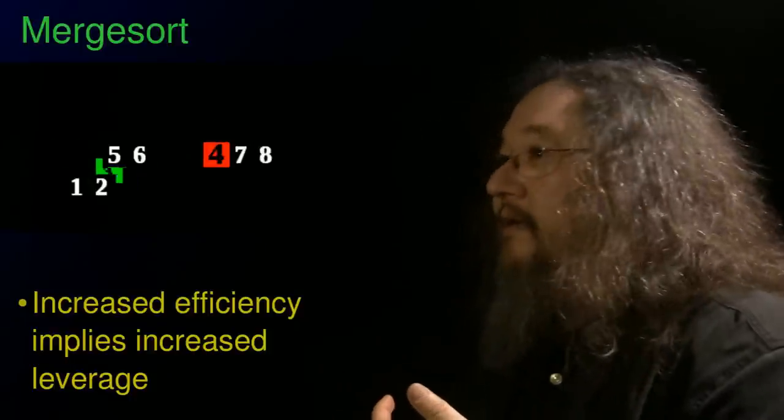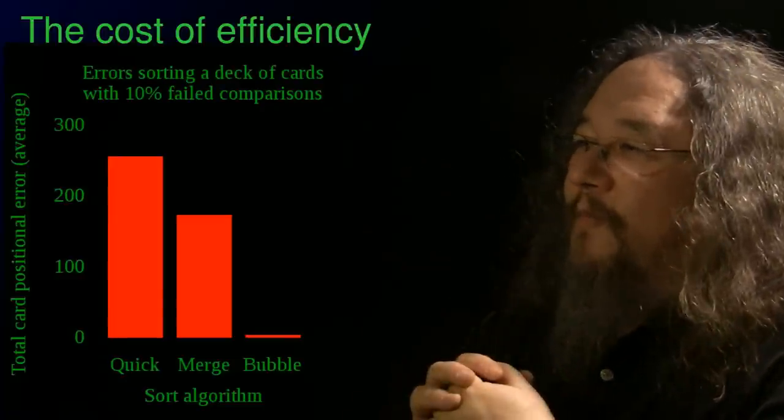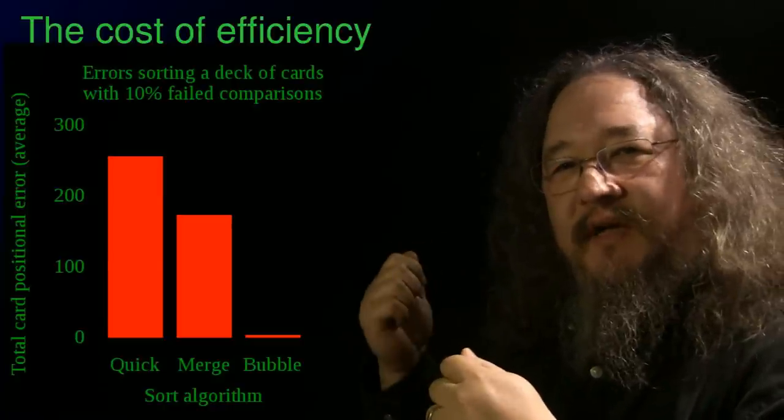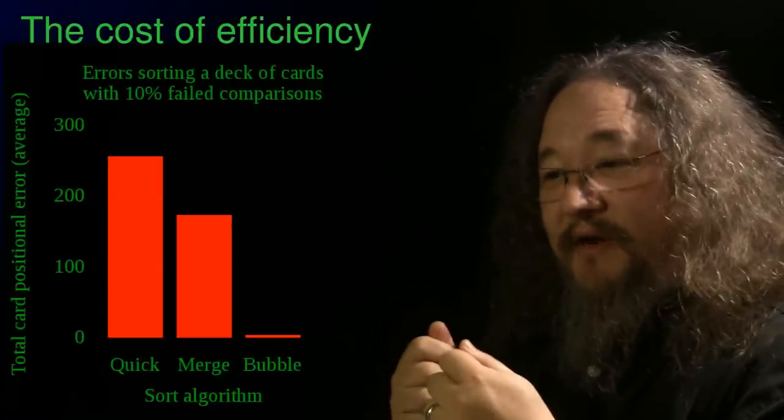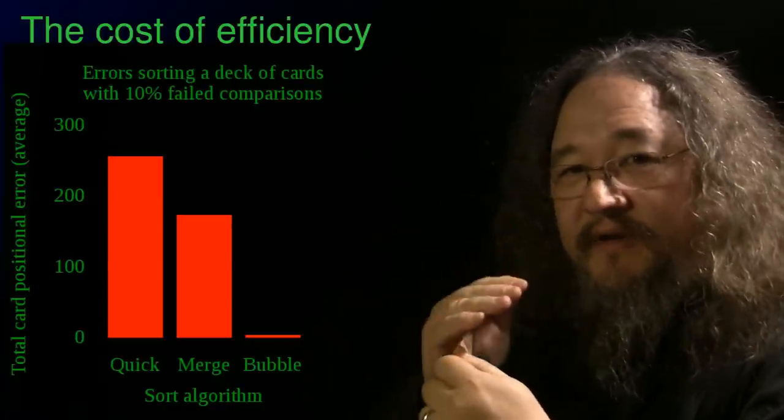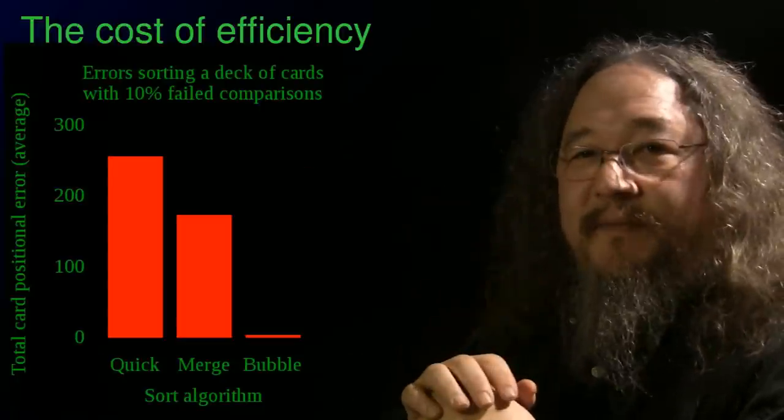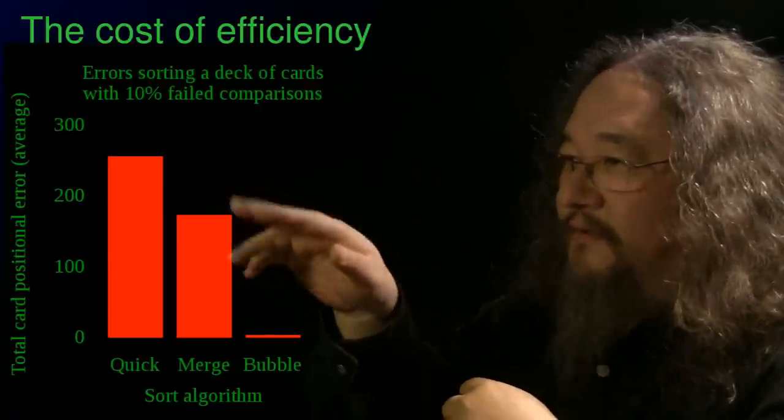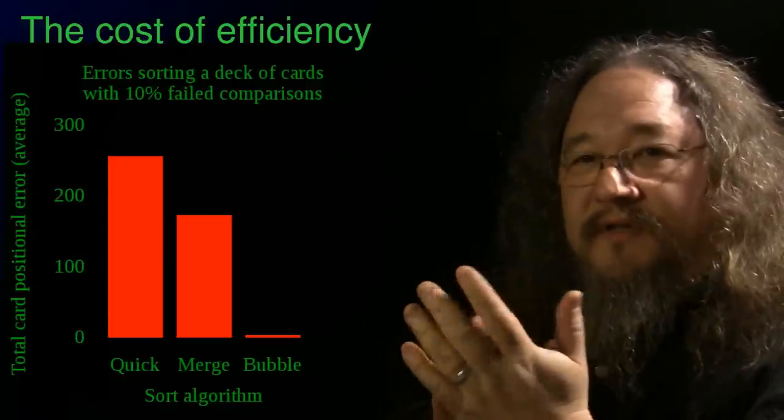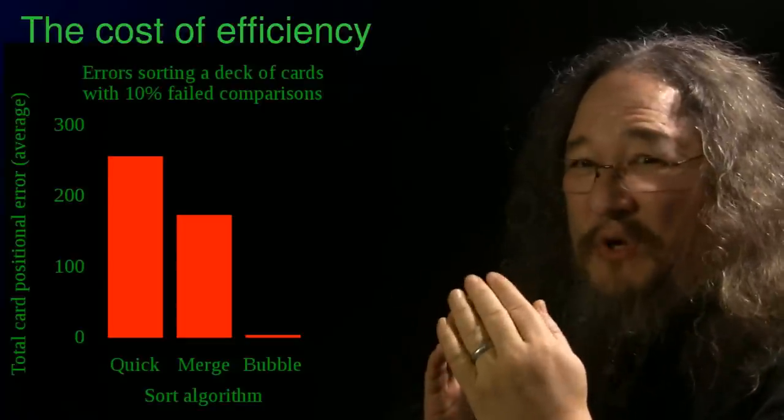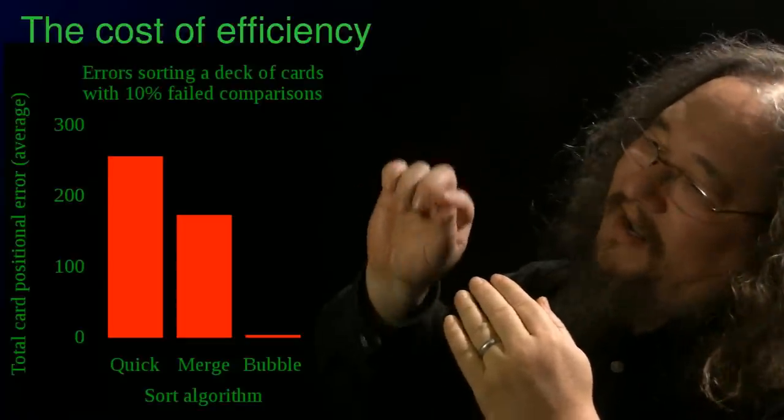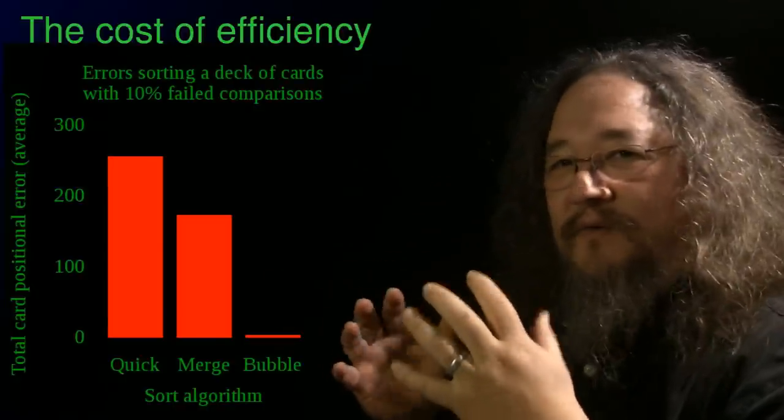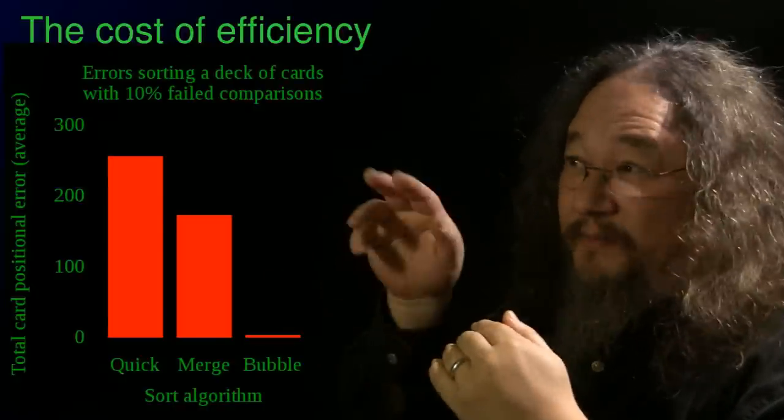Imagine shuffling a deck of fifty-two cards and then trying to sort them using the alien comparison device, which gets the comparison right, less than, greater than, or equal, ninety percent of the time. But in this example, ten percent of the time it just gives a crazy random answer. If we look at merge sort, that's the guy in the middle, or quick sort, another one of these efficient algorithms, they get pretty well slaughtered by this. And on the y-axis, going up and down, we have the total card positional error. Now depending on how the shuffling actually works, sometimes it's worse and sometimes it's better, so these are averages.